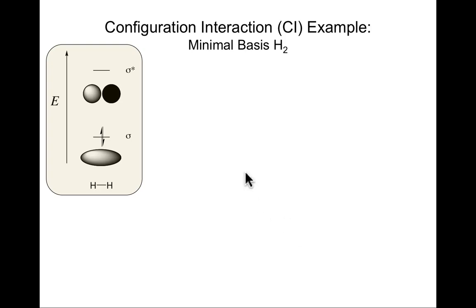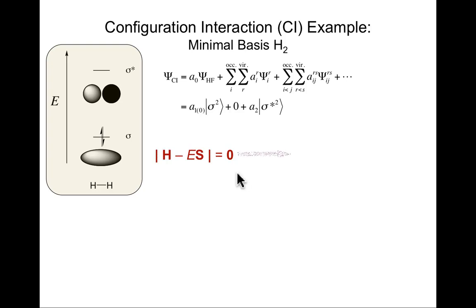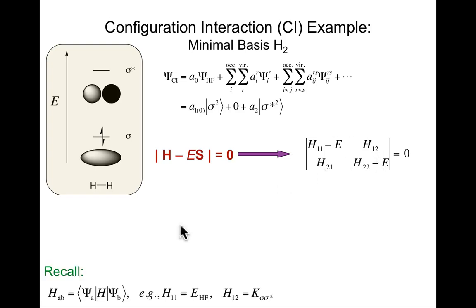I showed you a minimal basis set H₂ and showed that if we adopt this approach of constructing a CI wave function as a linear combination of σ² and σ*², the σσ* drops out for a variety of reasons, both symmetry and Brillouin's theorem. You can construct the relevant secular equation. You can figure out the matrix elements for the Hamiltonian interacting with the different wave functions, and the off-diagonal term is quite simple, an exchange integral involving the σ and σ* molecular orbitals.